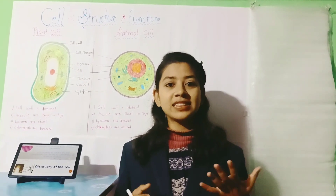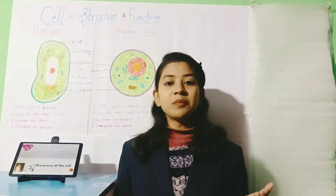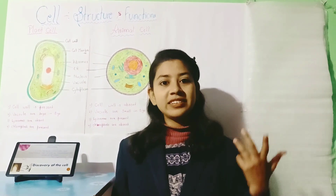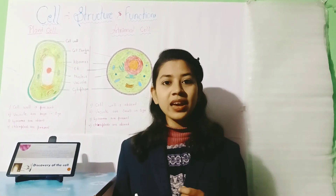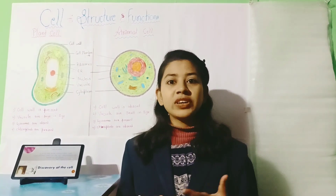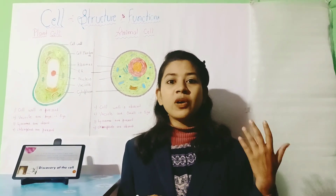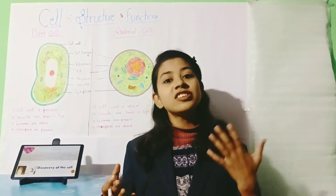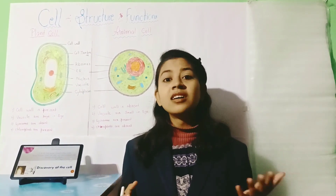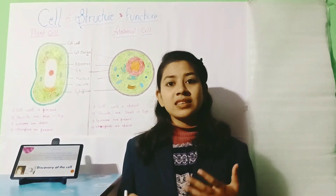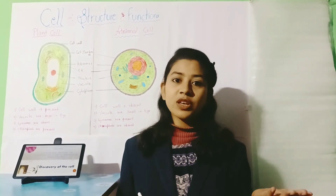What do you mean by this line? Structure means our entire body structure is made up of cell. And functional unit means, as we know, our body performs different functions like digestion, excretion, respiration, and so on — and this is done by different types of cells.